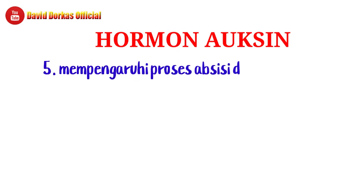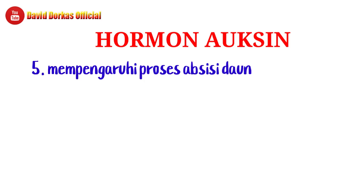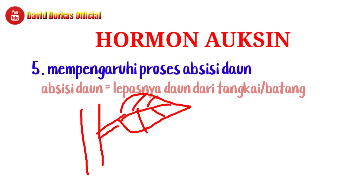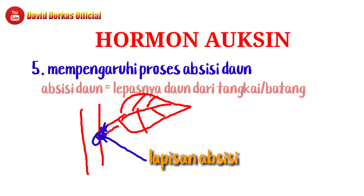Fungsi nomor lima adalah mempengaruhi proses absisi daun. Absisi daun adalah lepasnya daun dari tangkai atau dari batang. Pada bagian daun terdapat lapisan absisi yang dibentuk oleh hormon asam absisat. Ketika lapisan absisi terbentuk, distribusi hormon auksin menuju daun akan terhambat, sehingga daun kekurangan auksin dan akhirnya mengalami gugur daun.